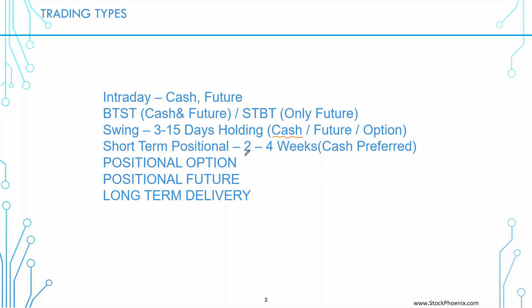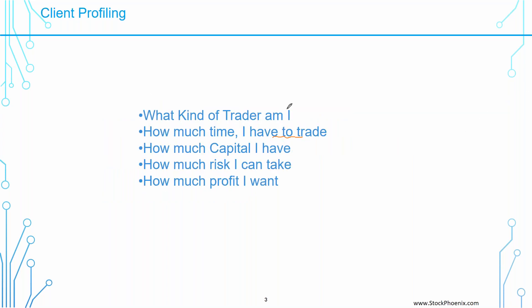The delivery research ideas published in Stock Phoenix are completely on short-term positional ideas. Other than intraday research ideas, these short-term positional ideas will give you a good risk and reward ratio without any big risk in the stock market. There is also positional future, positional delivery, and long-term delivery. These are all the types of trading. The very important thing is you should be able to understand what kind of trader you are — are you going to be an intraday trader, an investor, or both?